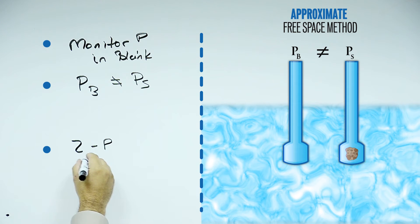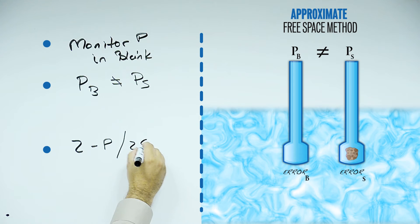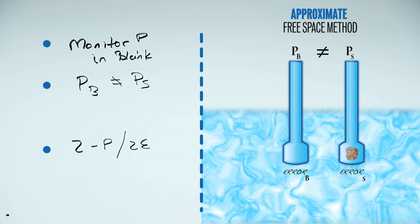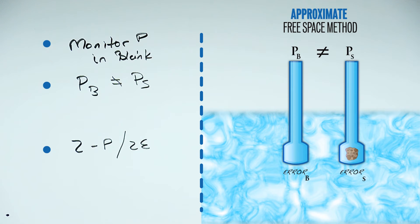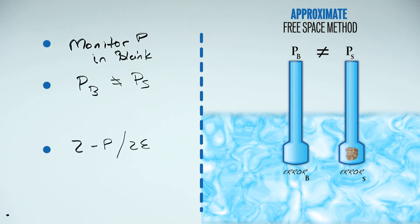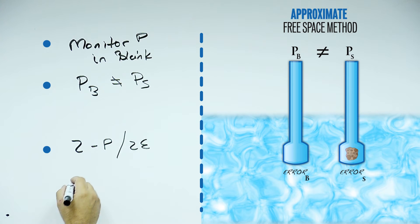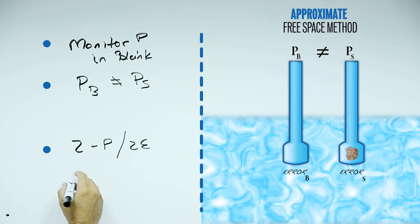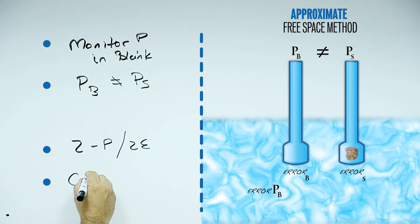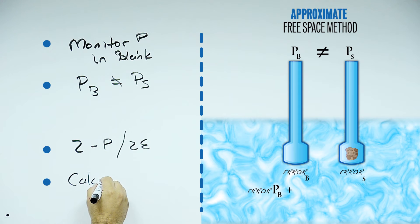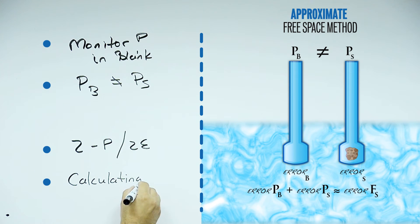Since we have two pressure measurements, we also have two error terms on the approximate free space method. During the analysis, we're always calculating or estimating the free space in the sample tube.